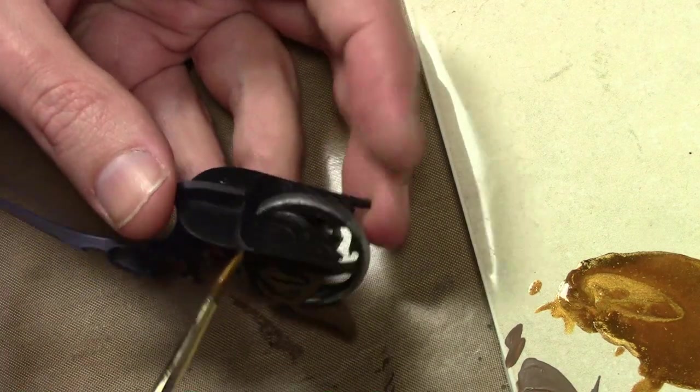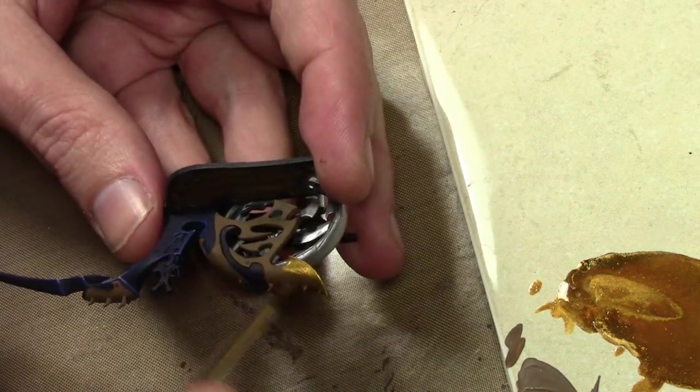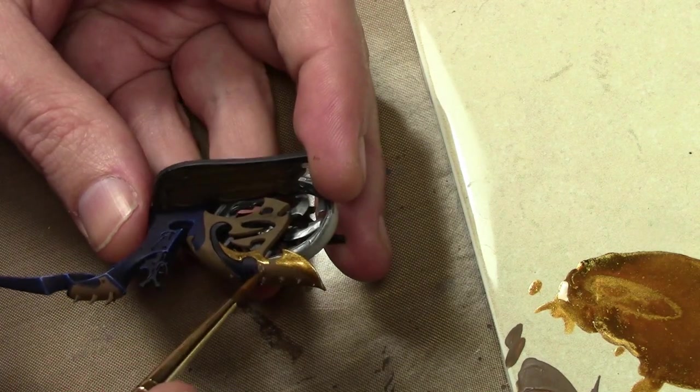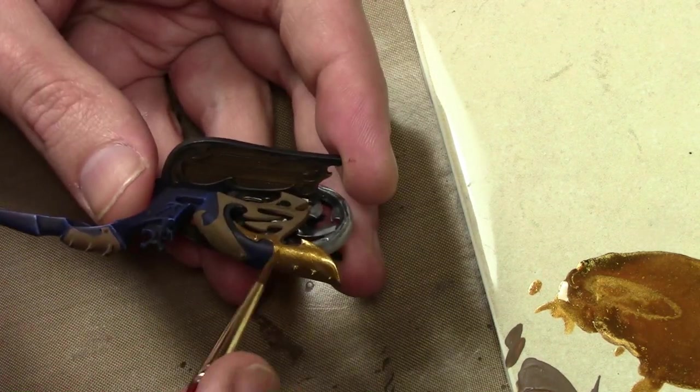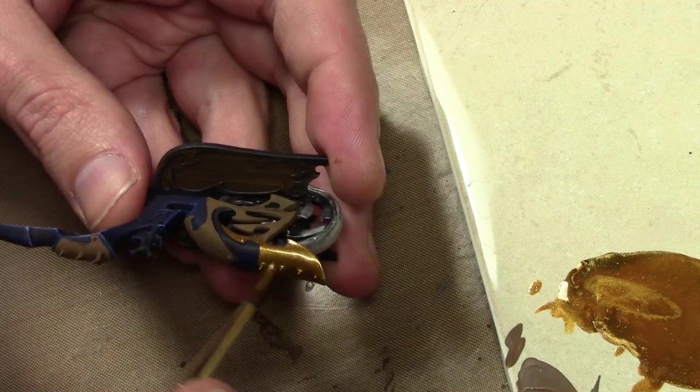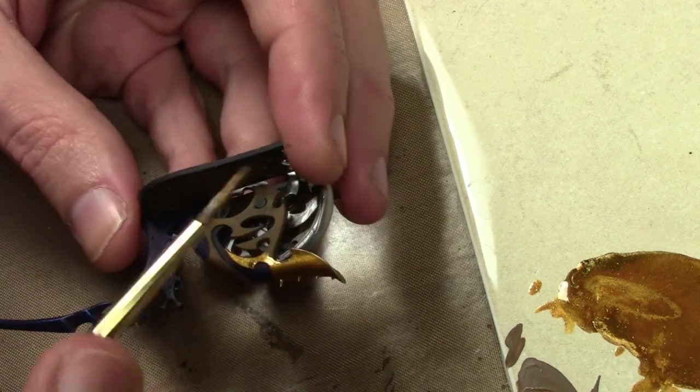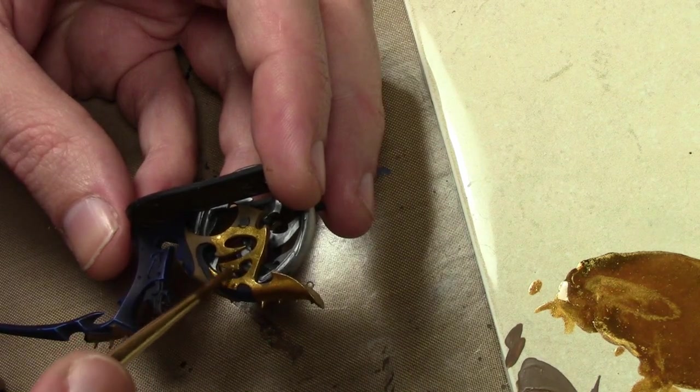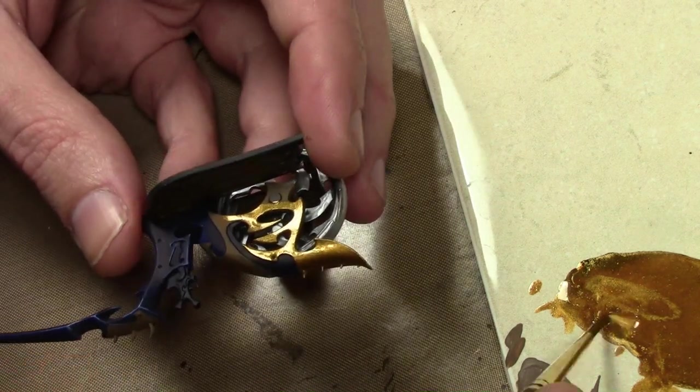Next comes the shade layer, and this is Glorious Gold mixed with my special Color Party wash that I use for gold that you can't get anymore because it's out of production. However, you can make the same thing by using brown and yellow ink mixed together.